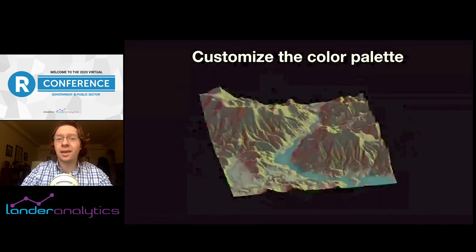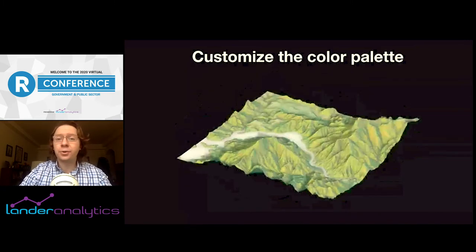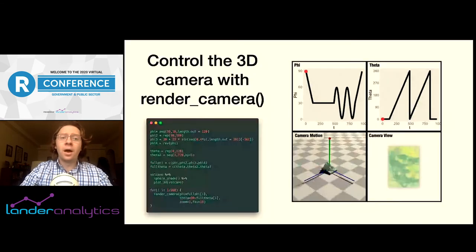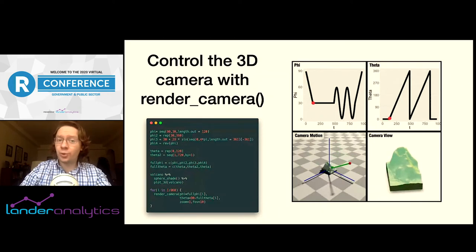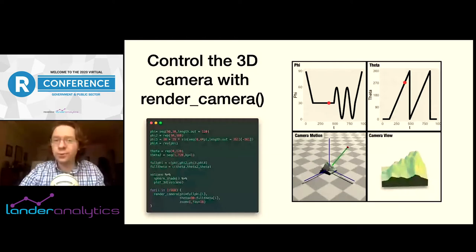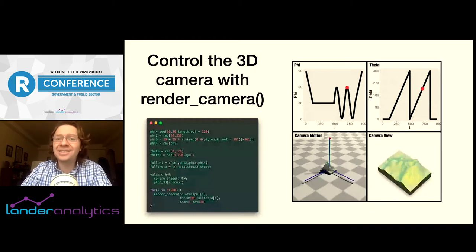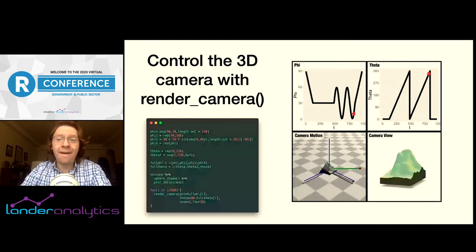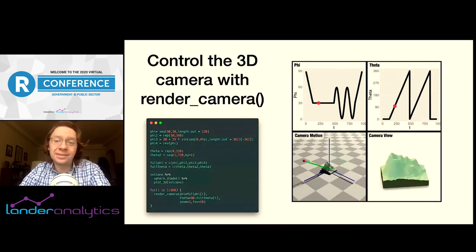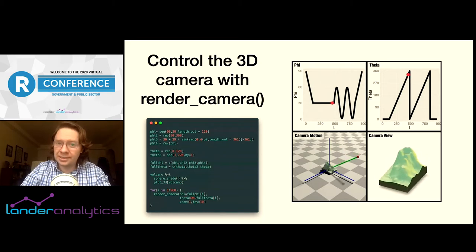Everything in RayShader is customizable — that's the cartography part of the package. Changing the color palette is incredibly simple. There are seven built-in palettes, but you can create your own with the create_texture function as well as customize the watercolor. When you create your 3D plot, you can either explore it interactively by dragging the 3D model around or control the camera programmatically with the render_camera function. This is useful if you want to create a complex animation where the camera zooms in and around for views of your data set. Working with 3D models in a programming language really shines here — you can program an entire animation in a single for loop like you would script any other repetitive task. I've plotted the camera angles phi and theta along with a rendering of a diagram of the scene and a view from the camera itself, showing how complex animations don't necessarily require complex code.